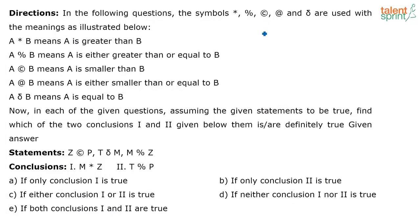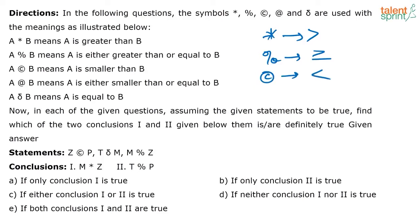In such questions the best way to solve is: whatever symbol represents, just write it down if you have the time. Star represents greater than. Percentage represents greater than or equal to, and C represents smaller than. Generally from this type you will have 4 or 5 questions that come, at least 2 or 3 of the same type. So if you note down what each symbol represents, it will be easier to rewrite the question accordingly.